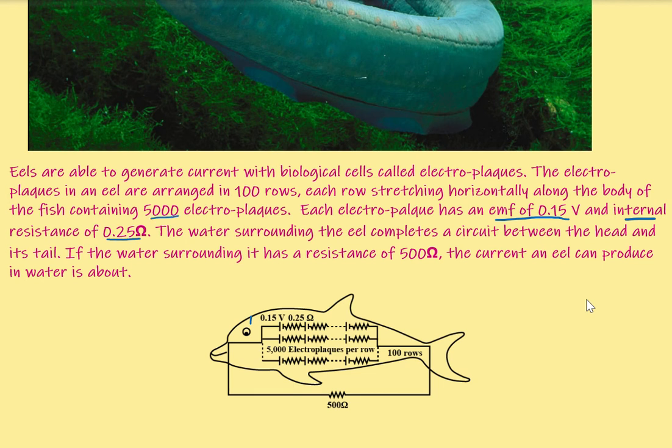There are 5000 electroplaques in a row from the head to its tail and there are 100 rows throughout its body. Now if the circuit is completed by the water surrounding the fish and if its resistance is 500Ω, let's calculate how much current is produced by this eelfish.